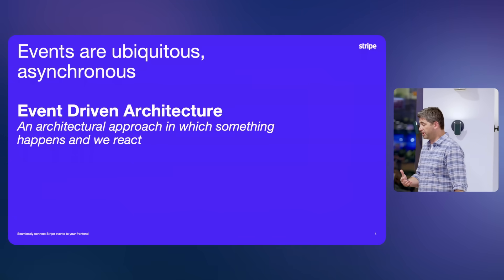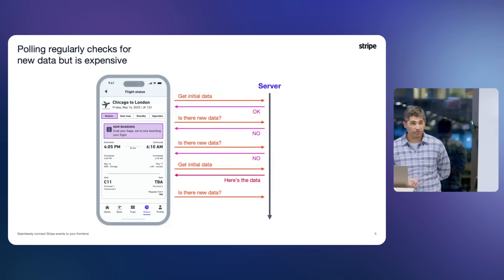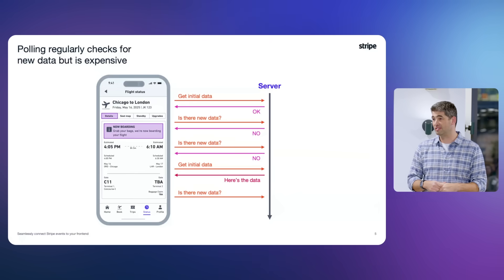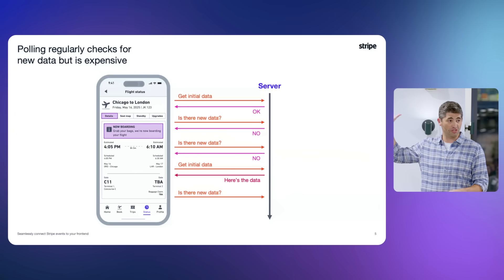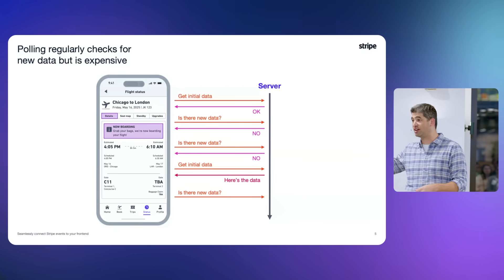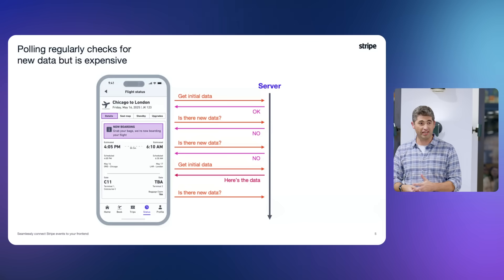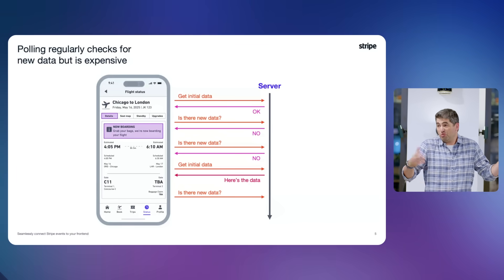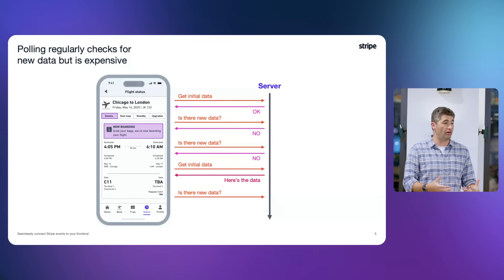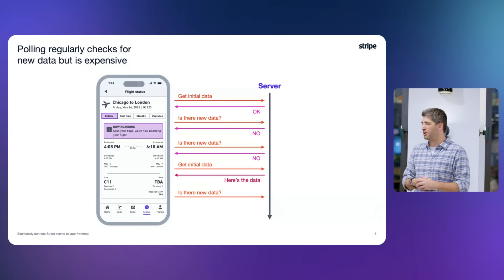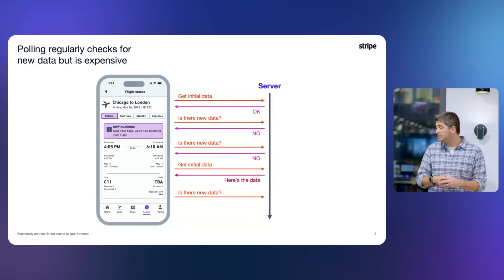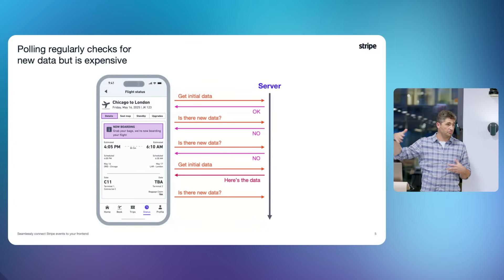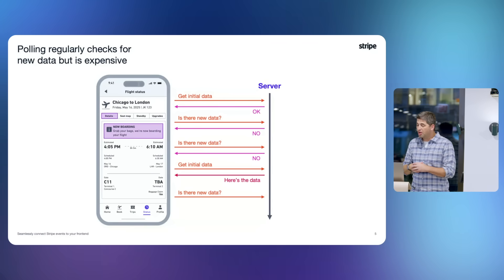There are a couple of broad patterns we can use to find out about events. In the context of my airline example, the first is polling. Do we have parents in the room? This is the kids sitting in the back of the car asking 'are we there yet, are we there yet.' Polling works in some use cases — maybe the data is not changing that often or you only need to update every couple of hours. Polling is really easy to implement; you just set a repeating loop with some delay to go check an API.